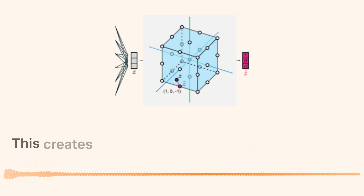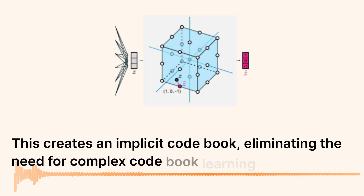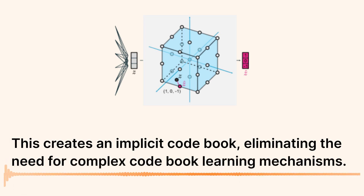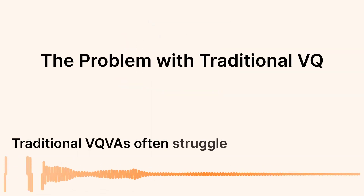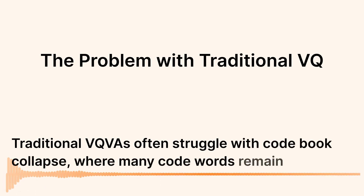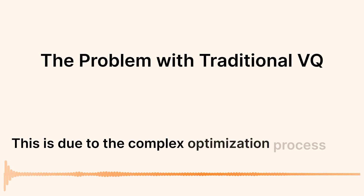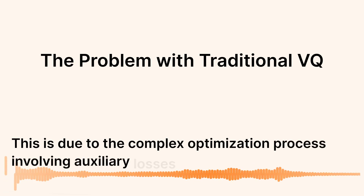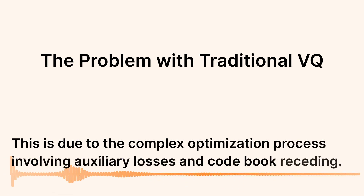This creates an implicit codebook, eliminating the need for complex codebook learning mechanisms. Traditional VQ-VAEs often struggle with codebook collapse, where many codewords remain unused — due to the complex optimization process involving auxiliary losses and codebook reseeding.